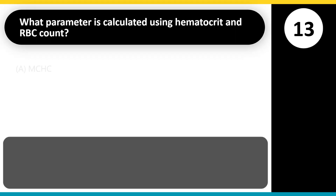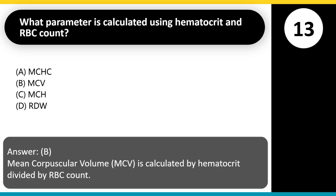What parameter is calculated using hematocrit and RBC count? A. MCHC. B. MCV. C. MCH. D. RDW. Answer: B. Mean corpuscular volume (MCV) is calculated by hematocrit divided by RBC count.